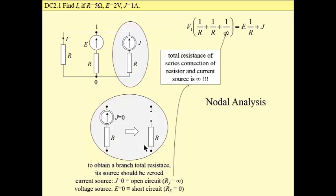At first, nodal analysis. This is our network once again and a single nodal equation. Please observe that this branch conductance is zero. This branch resistance is infinity. To obtain a branch total resistance, its source should be set to zero, which means our current source should be opened. And an open circuit in series with arbitrary resistance is still an open circuit, an infinitely large resistance. Conductance then is equal zero.